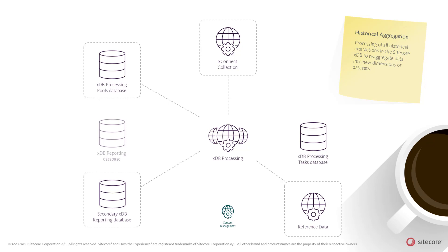During a historical aggregation, the data is continually stored in the secondary XDB reporting database. As noted before, if there are any new interactions coming in through the XConnect collection service, they will be written to both the primary and secondary databases by the live aggregation process. This makes sure that new interactions coming in through XConnect during the historical aggregation process won't be lost.